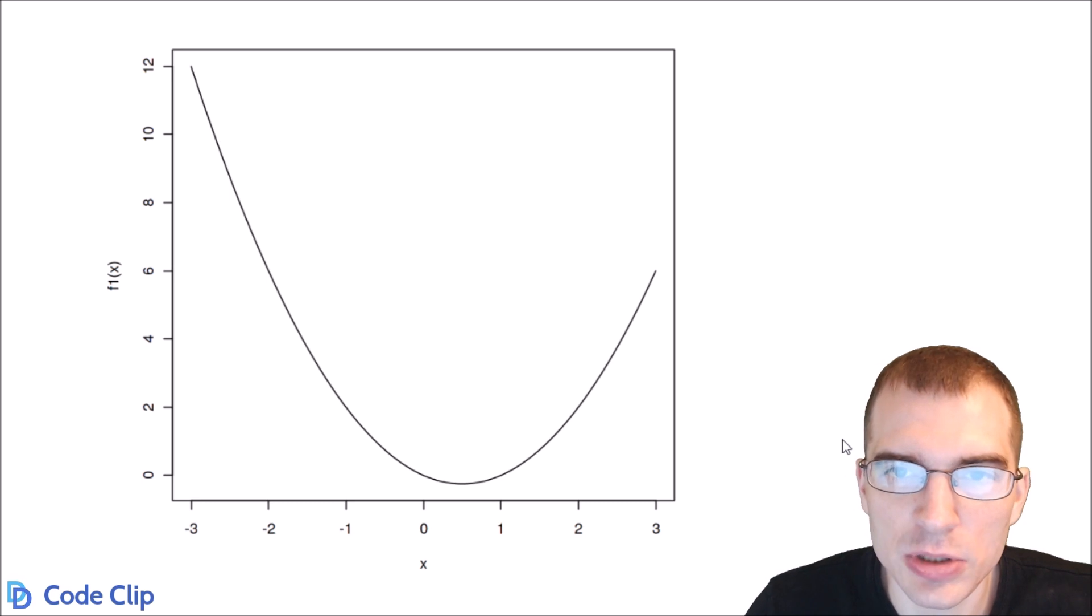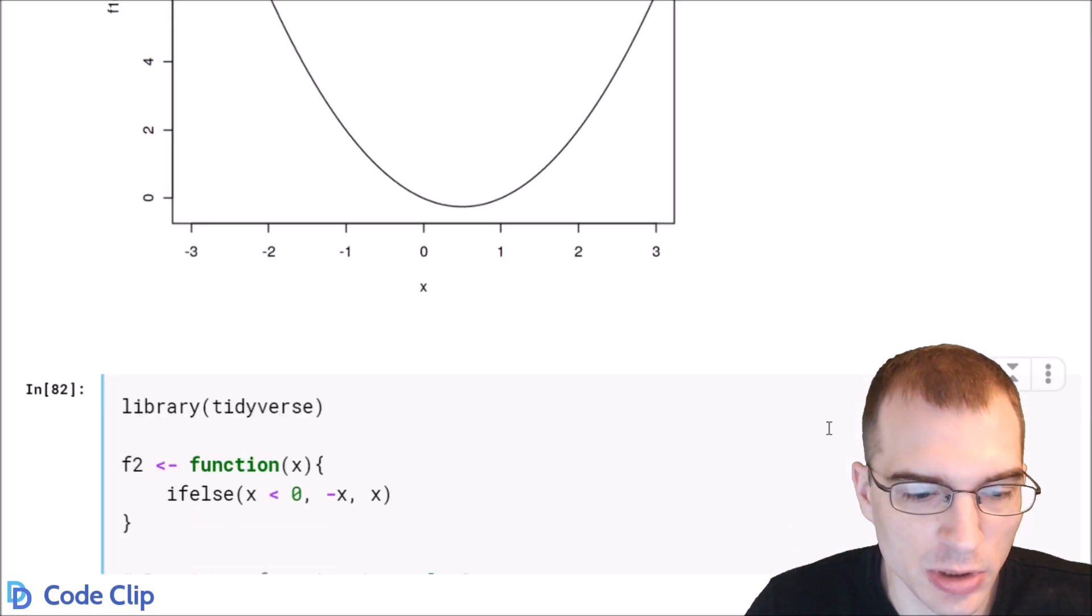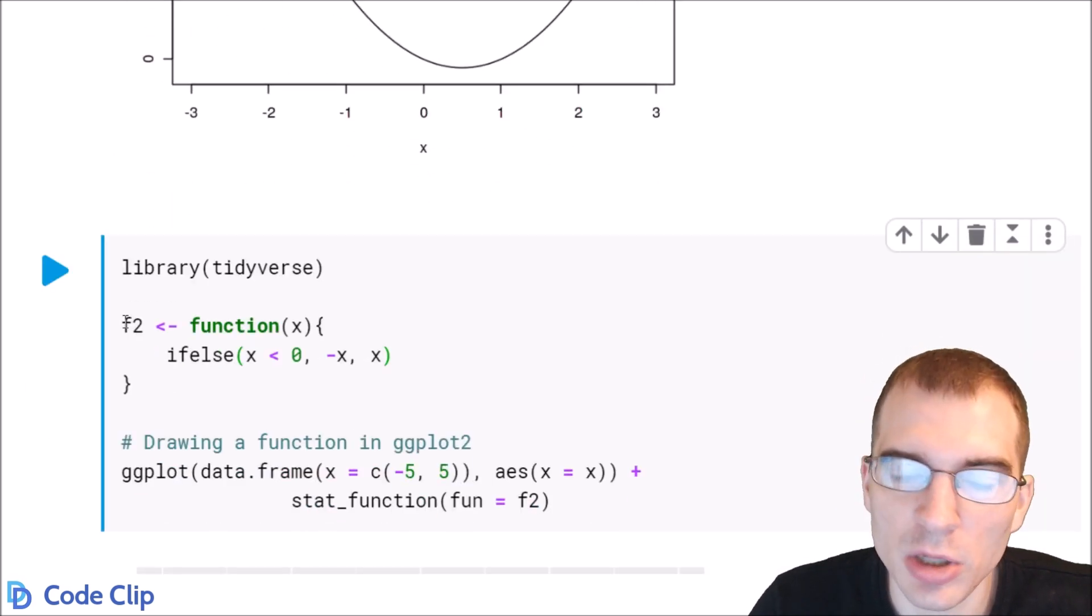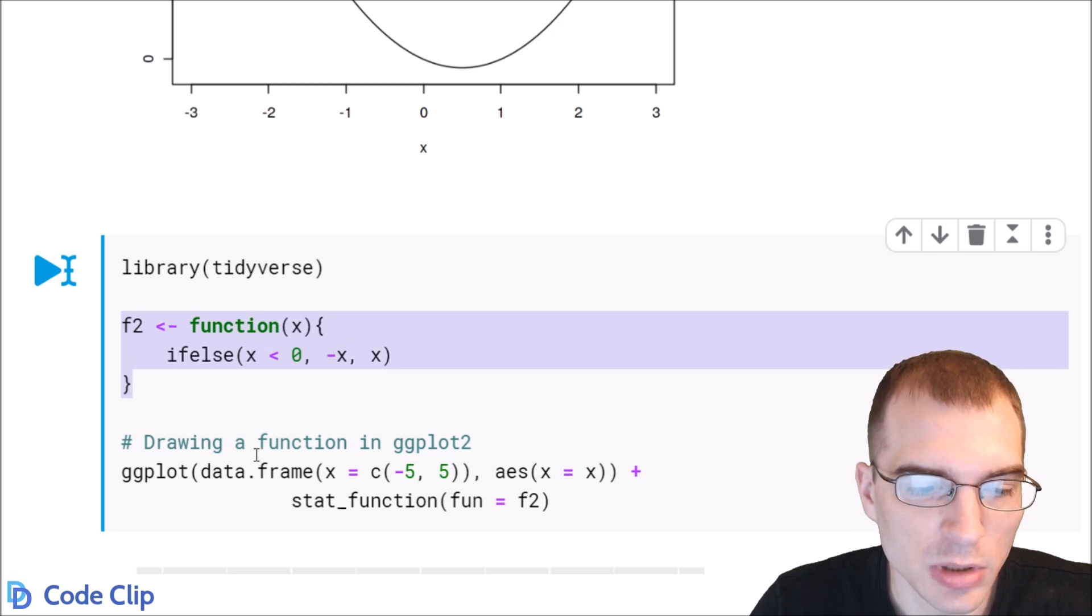Now we can also plot functions using ggplot2 so we'll show how to do that. We'll start by defining a new function. And then to plot it we're just going to call ggplot. We're going to create a new data frame as the data argument.